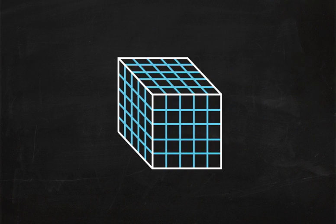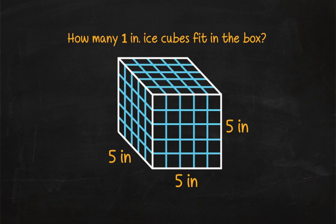Now here's an actual problem about volume for you to solve. On a hot summer day, Herman put ice cubes in a box which was 5 inches long, 5 inches wide, and 5 inches high. How many 1 inch ice cubes fit into his box?